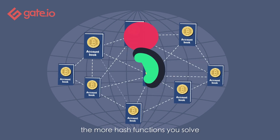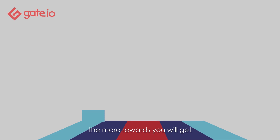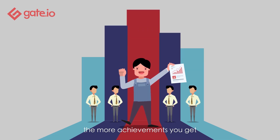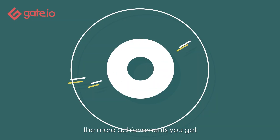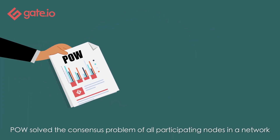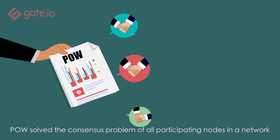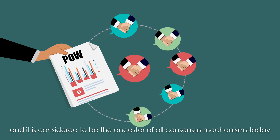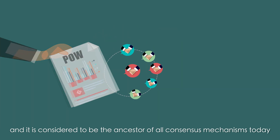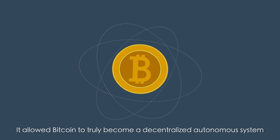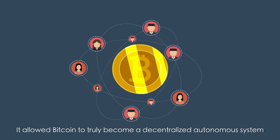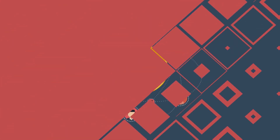In brief, the more hash functions you solve, the more rewards you will get — the harder you work, the more achievements you get. POW solved the consensus problem of all participating nodes in a network, and it is considered to be the ancestor of all consensus mechanisms today. It allowed Bitcoin to truly become a decentralized autonomous system.